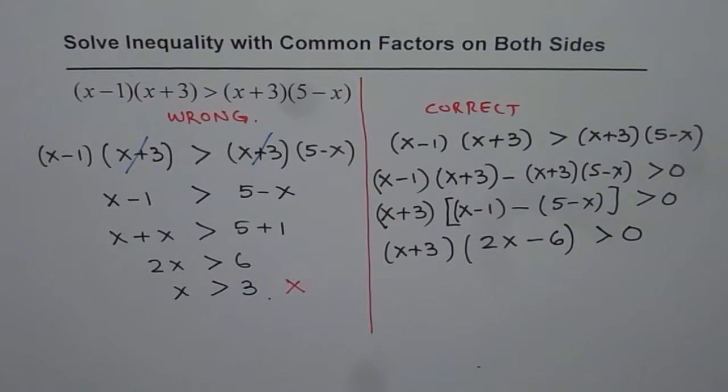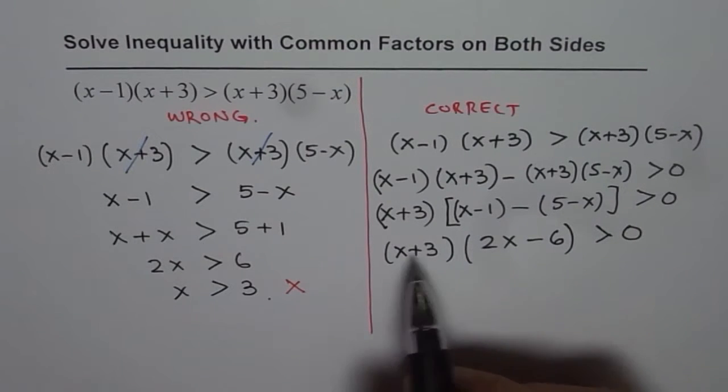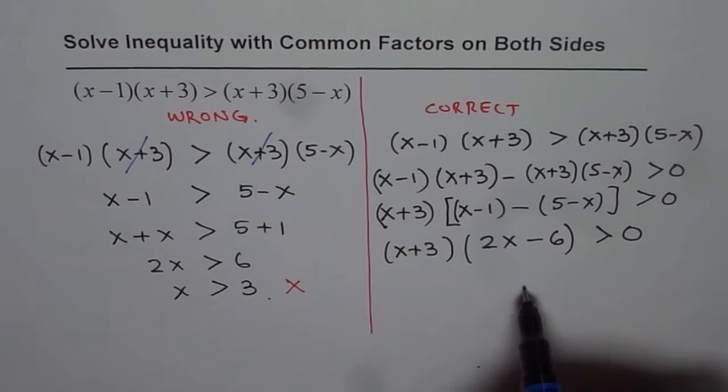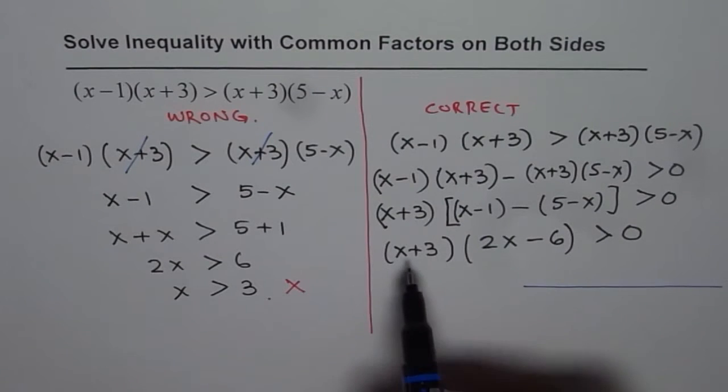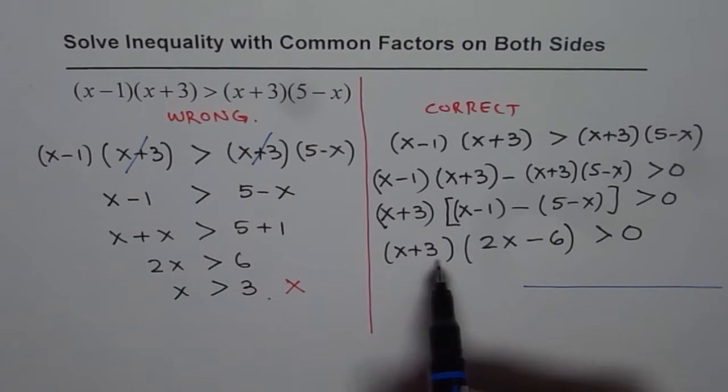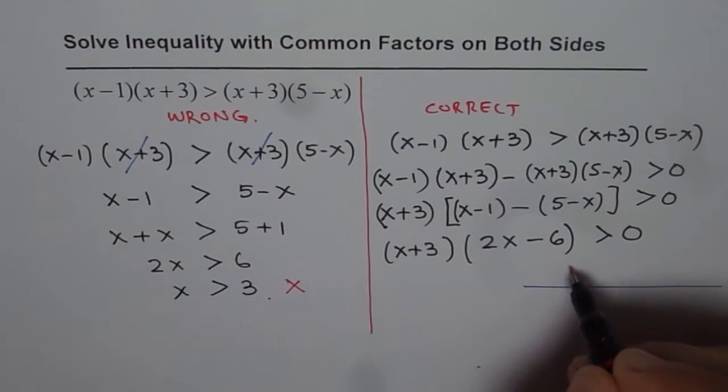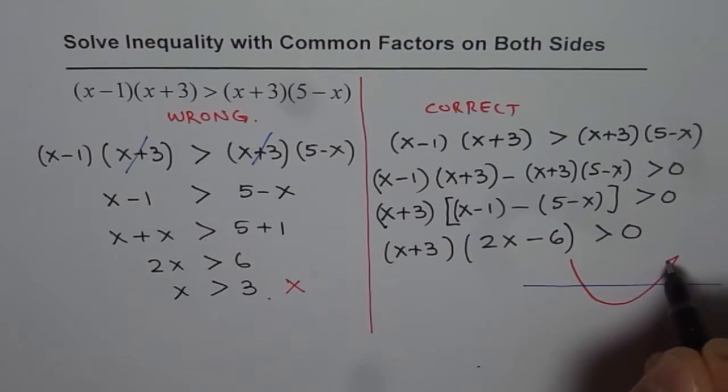You could still take 2 common and then solve it. I will show you how to write the solution from here. We can take test points. We know one thing very clearly: when you multiply these two, you are getting a quadratic equation and a parabola. This parabola opens upwards and it has two zeros. Let me draw a parabola here - it opens upwards and has two zeros.